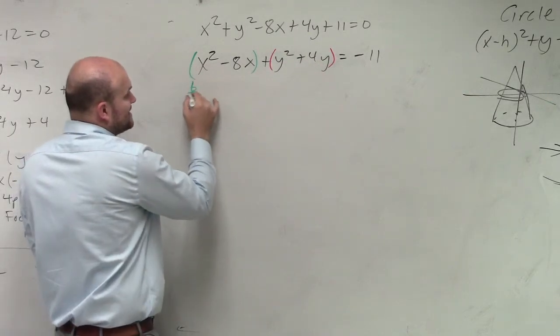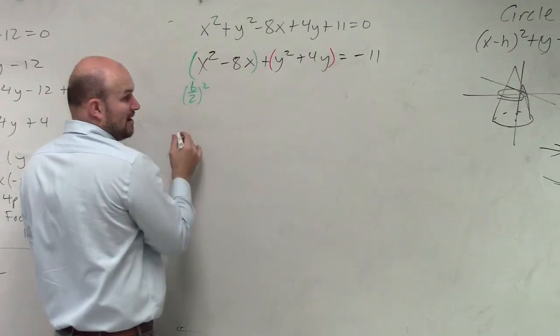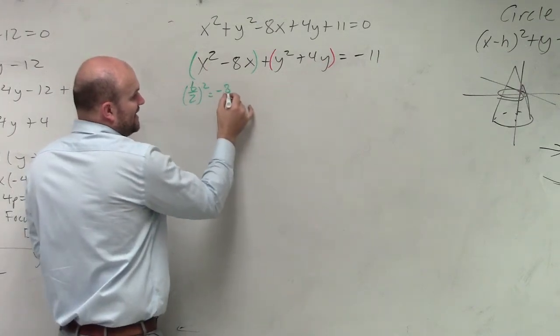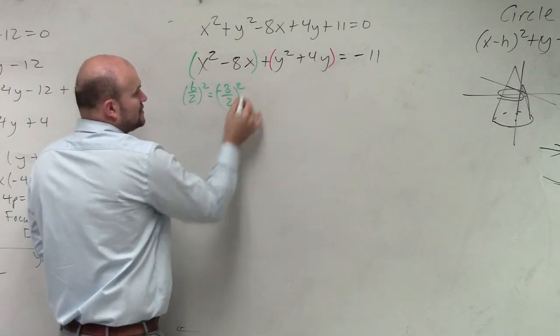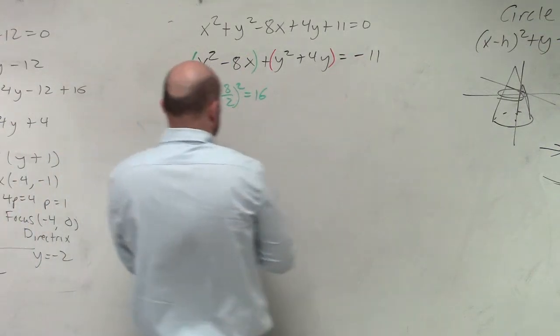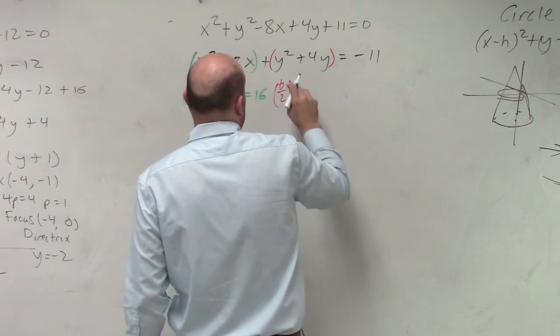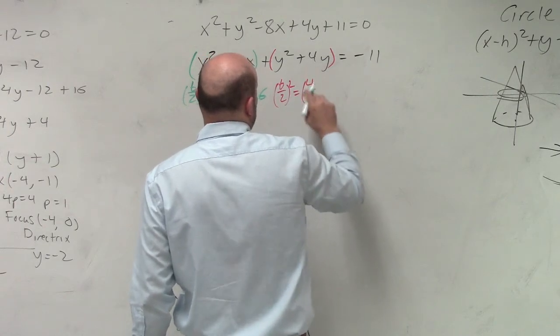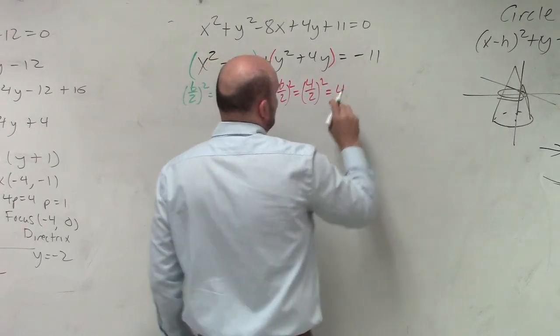So in both of these cases, I need to take b divided by 2 and square it. So in this one, it's negative 8 divided by 2 squared. Negative 8 divided by 2 is negative 4. Negative 4 squared is 16. And then here, I have b divided by 2 squared, which is 4 divided by 2 squared, which equals 4.